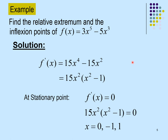Using the second derivative test, we differentiate again to get f''(x). Substituting x = 0 into f''(x) gives 0, so no conclusion can be made — the test is inconclusive for x = 0. For x = −1, substituting into f''(x) gives −30, which is less than 0, indicating a relative maximum.